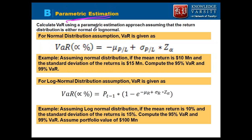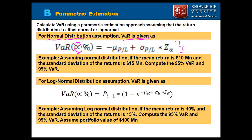The next learning objective asks us to compute VaR using parametric estimation, assuming either a normal or a log-normal return distribution. For a normal distribution, VaR at significance level alpha is given as: minus mu plus Z times sigma, where mu is the mean return (profit or loss) and sigma is the standard deviation.